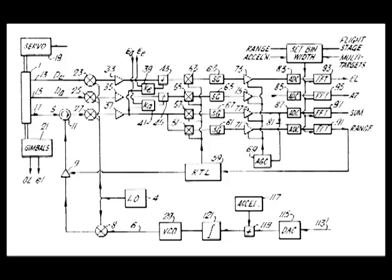The guidance subsystem uses deviations to generate corrective commands to drive the missile from a position where it is to a position where it isn't, and arriving at a position where it wasn't, it now is.